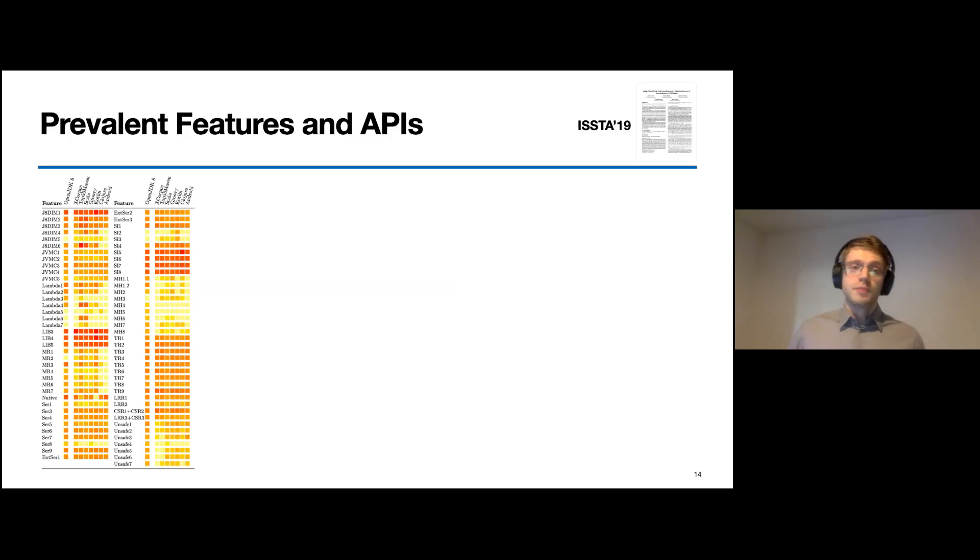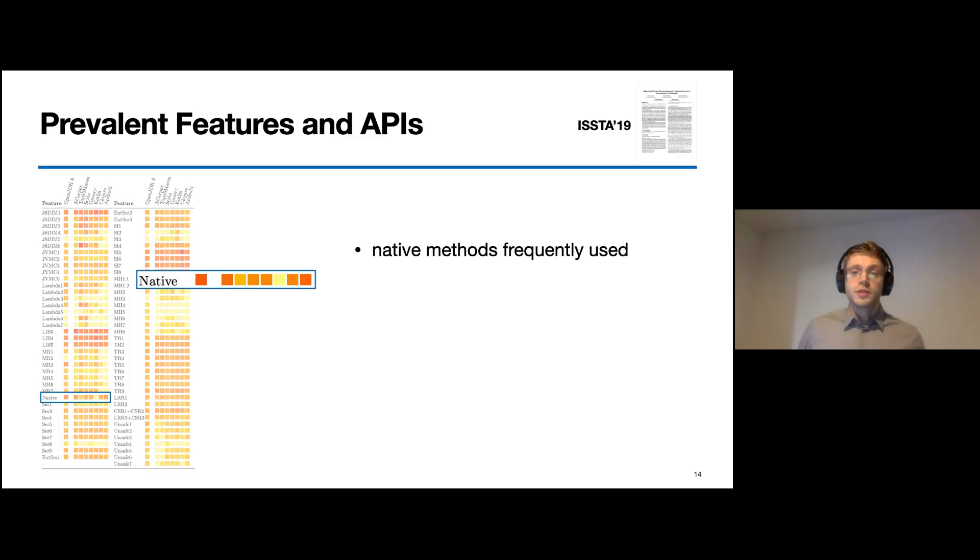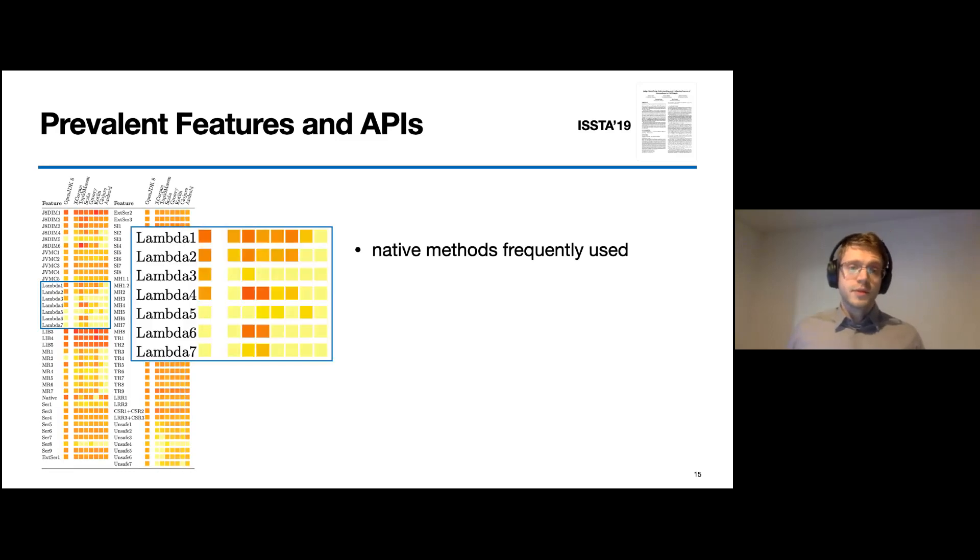Here, each box in the map indicates how often the feature occurs in a given corpus. Yellow boxes indicate that the feature occurrences are very few, and red boxes indicate that the feature is very frequent. When we, for example, look at native methods, we see that they are frequently used almost everywhere, except in the Kotlin projects that we hand-picked. When we take a closer look at lambdas, we can see that some of them occur more often than others, and they also do not occur in all corpora.